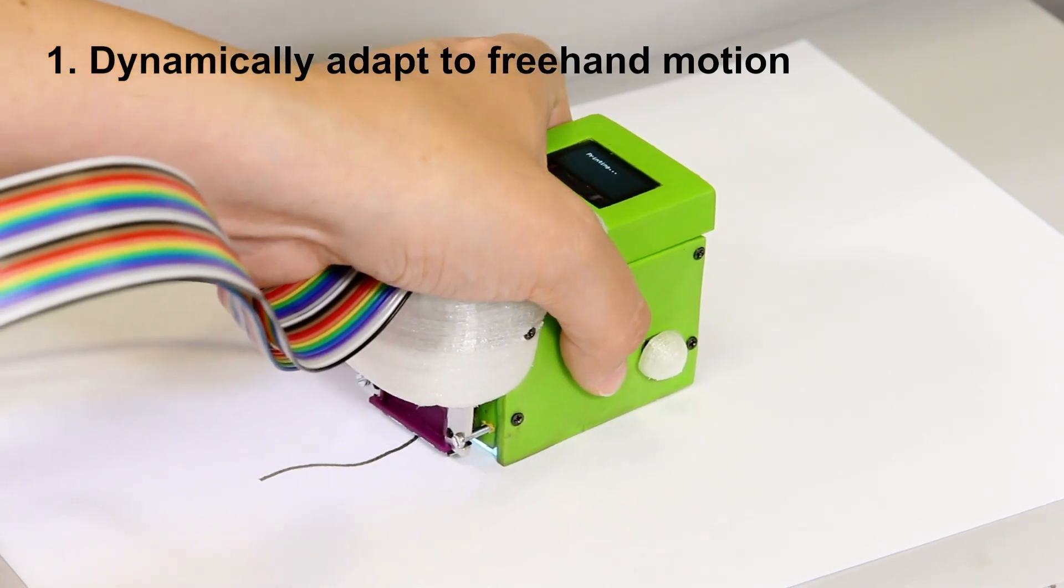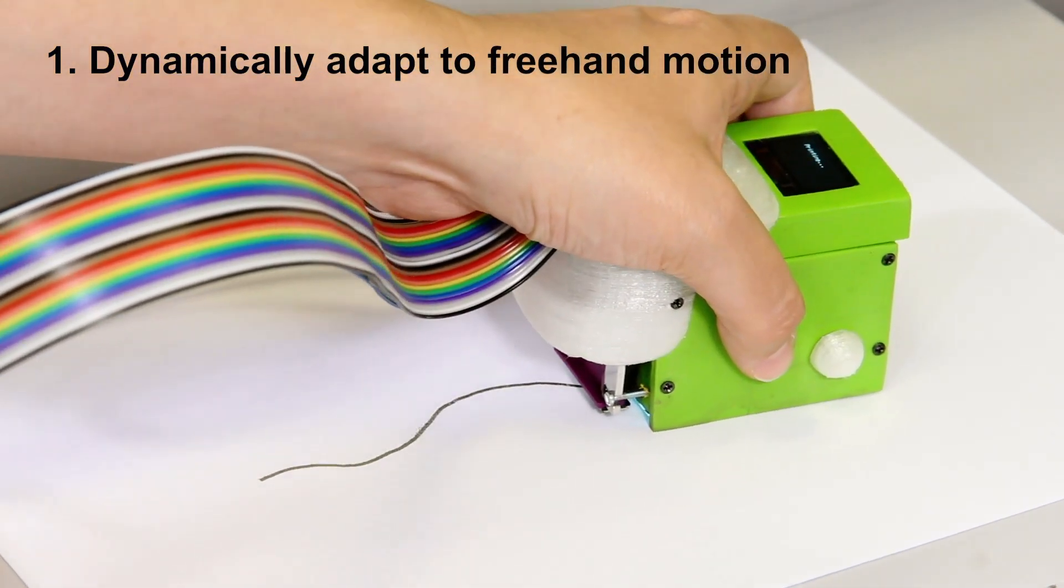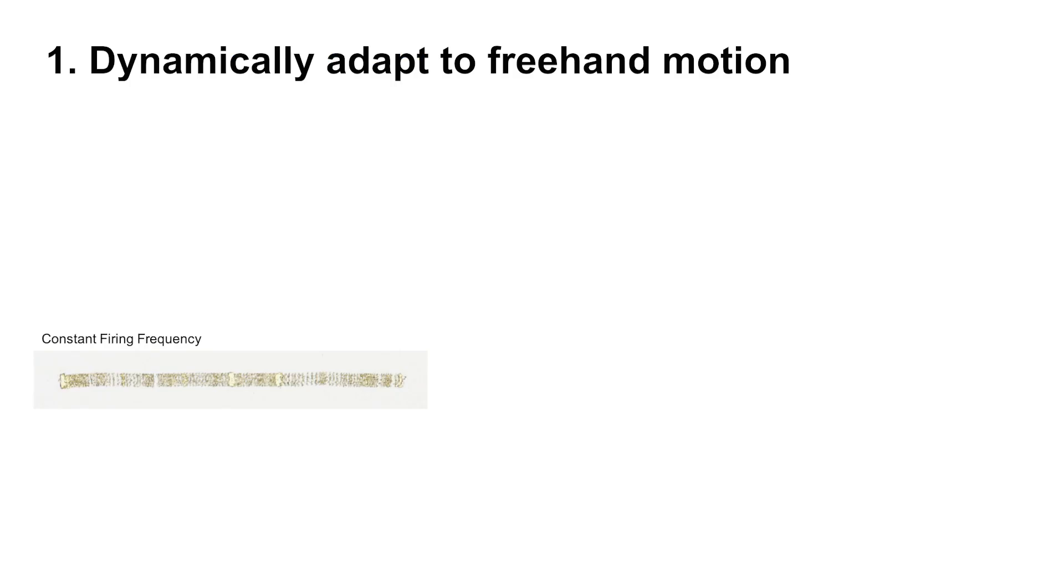Imagine you are holding the handheld tool and drawing a curved line. This seems really easy to do, but actually it is not. If the print speed doesn't adjust to the speed of movement, the result will be visually inconsistent and non-conductive, as we can see here.